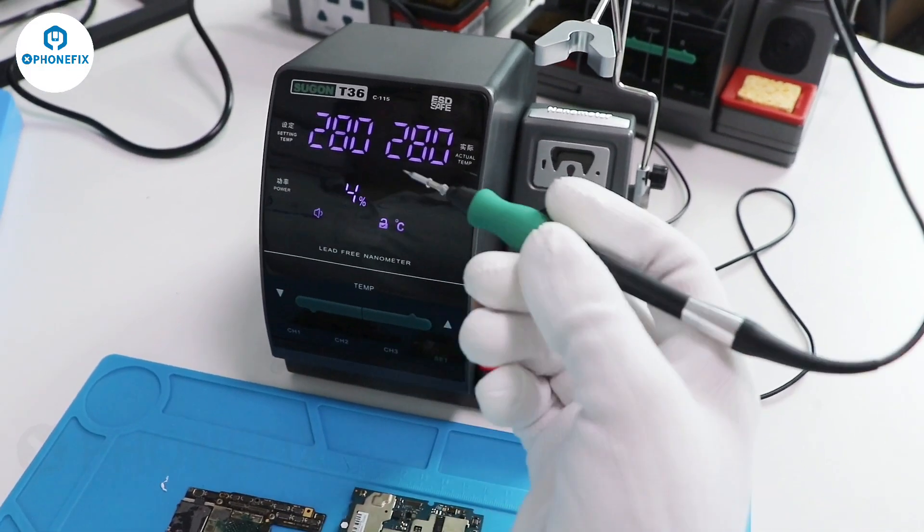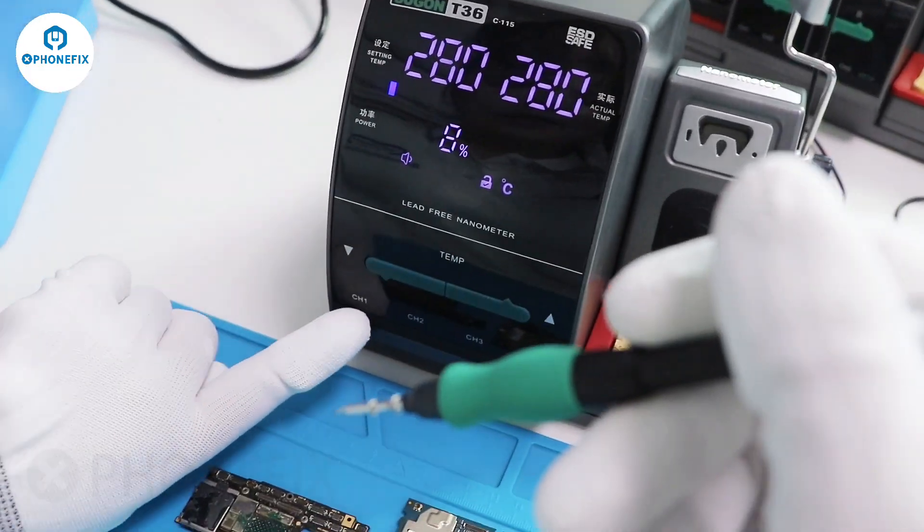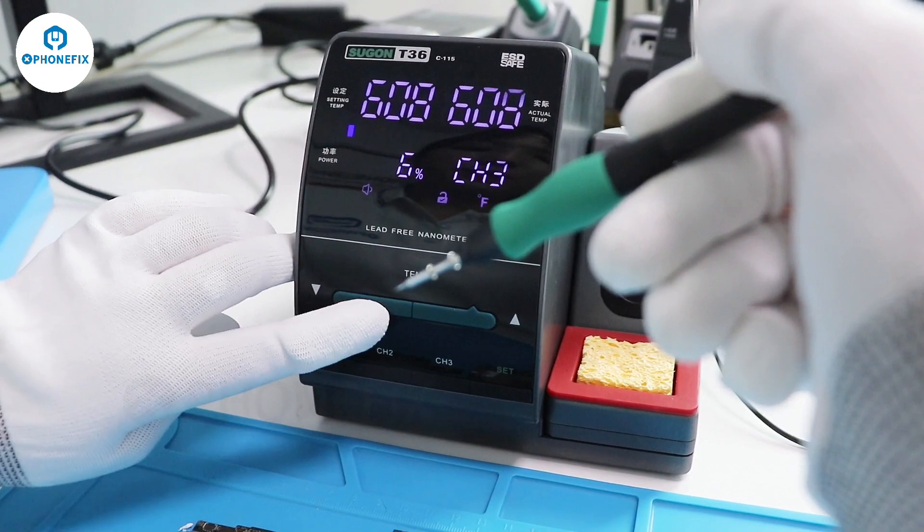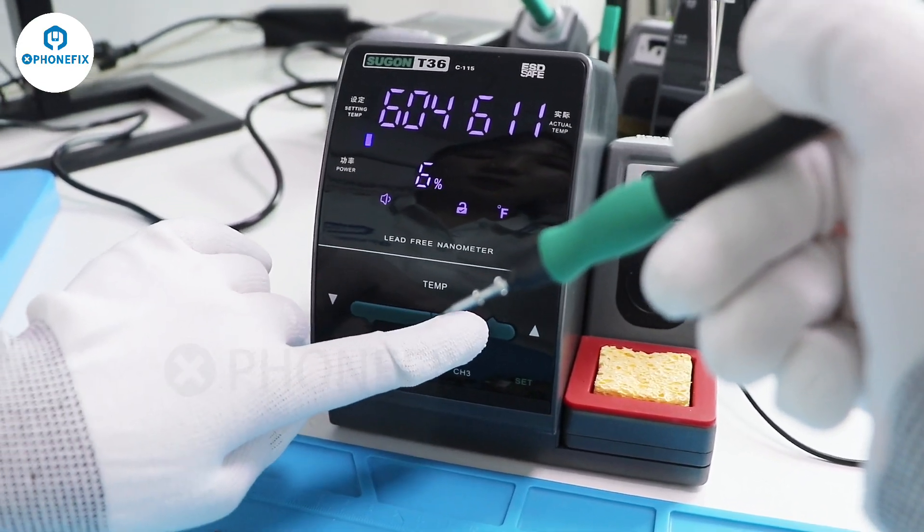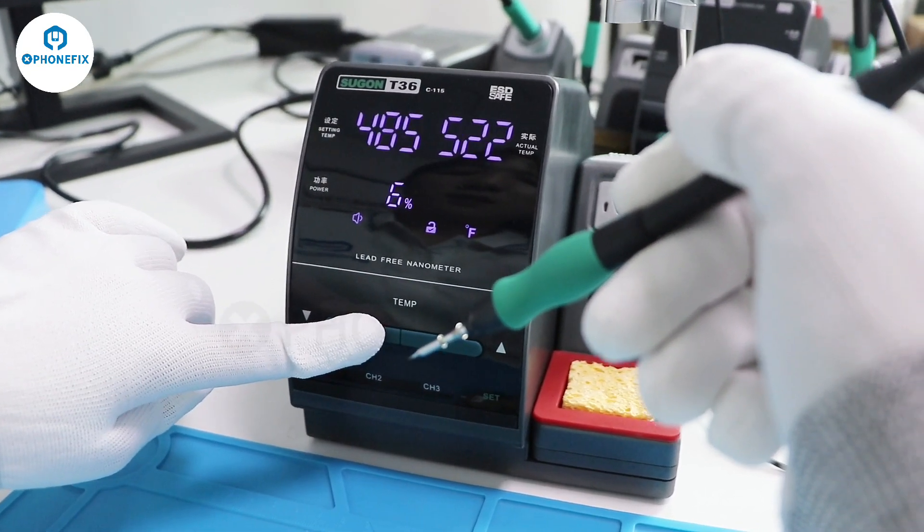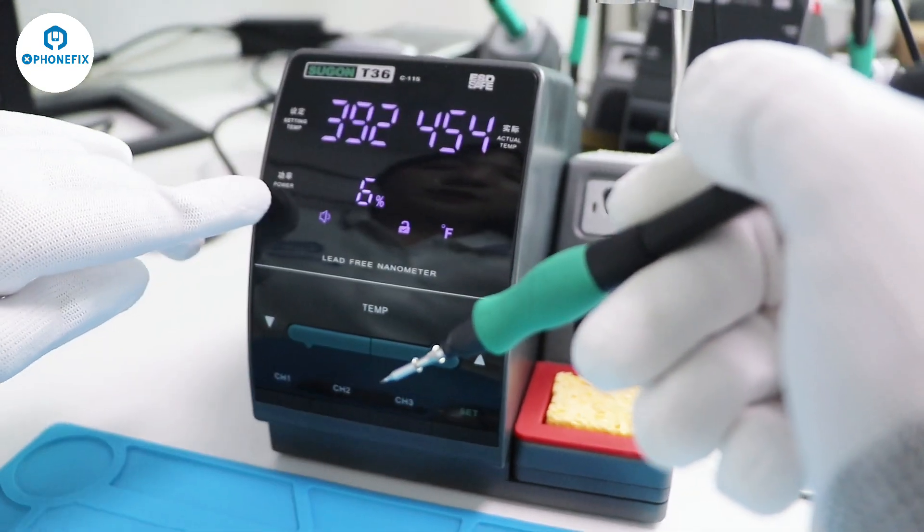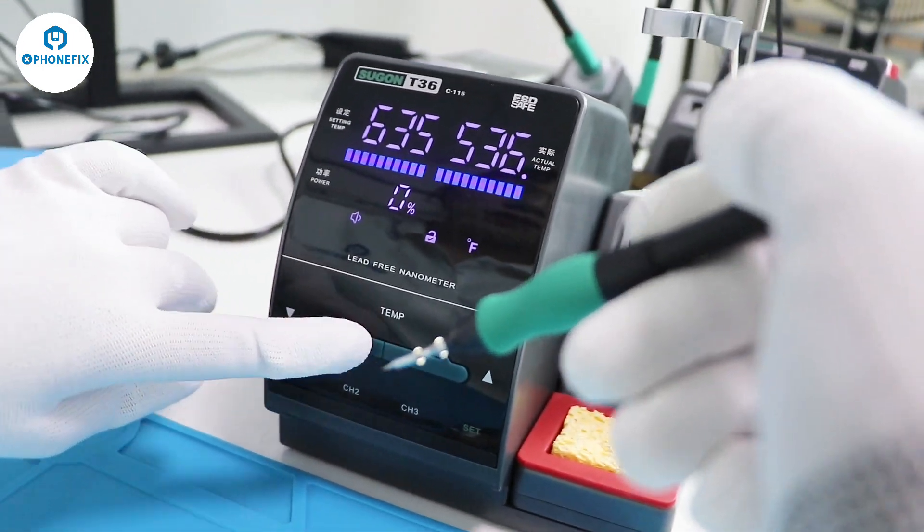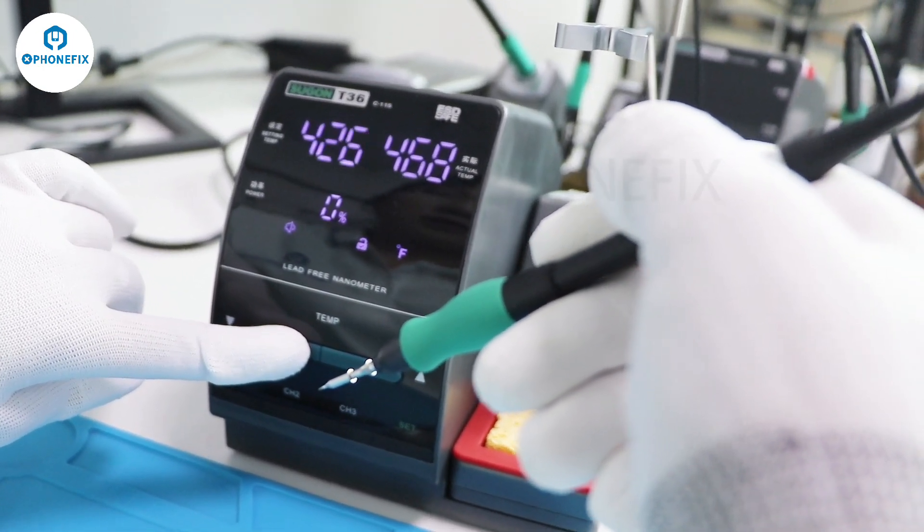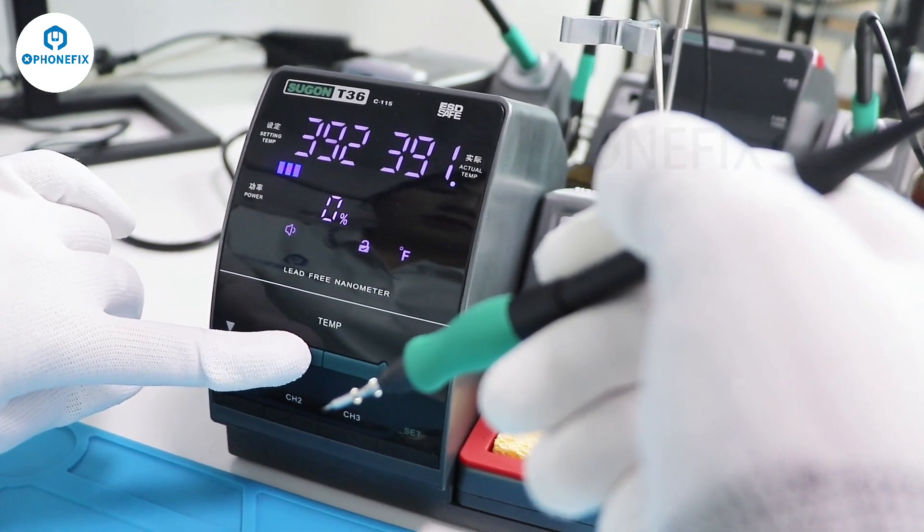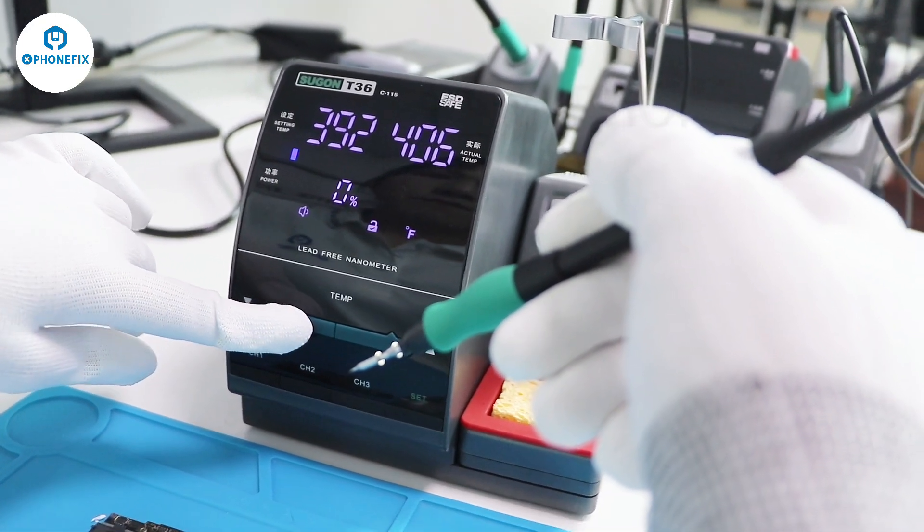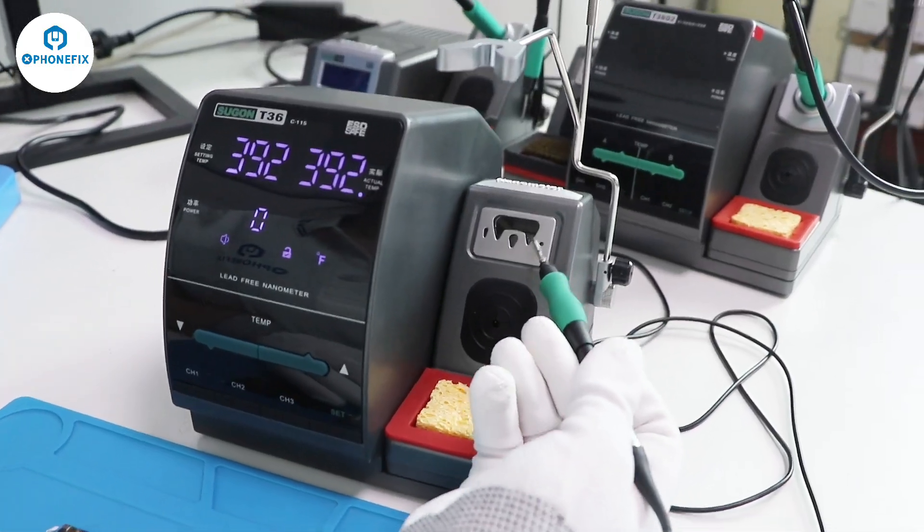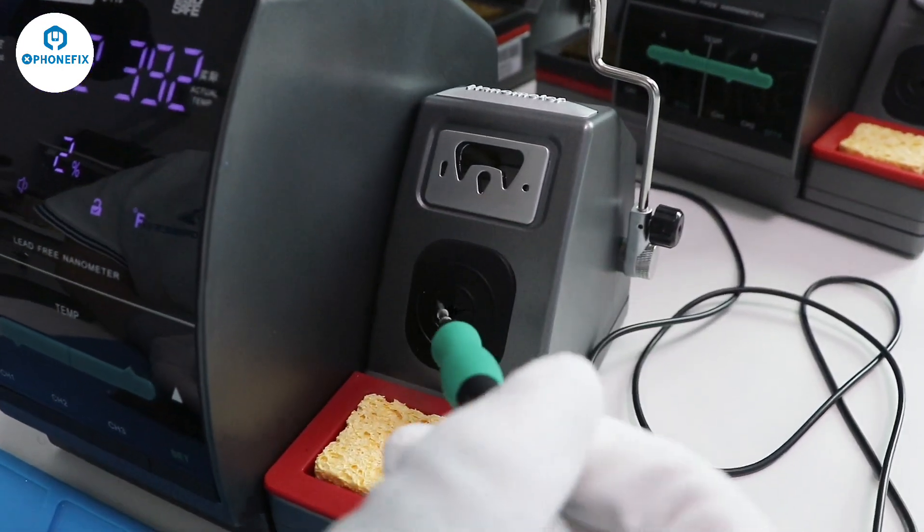It's with the C150 handle. It has the voltage channel. As you can adjust here. Here is the power. The C150. And we can also replace the tip here. To clean it here.